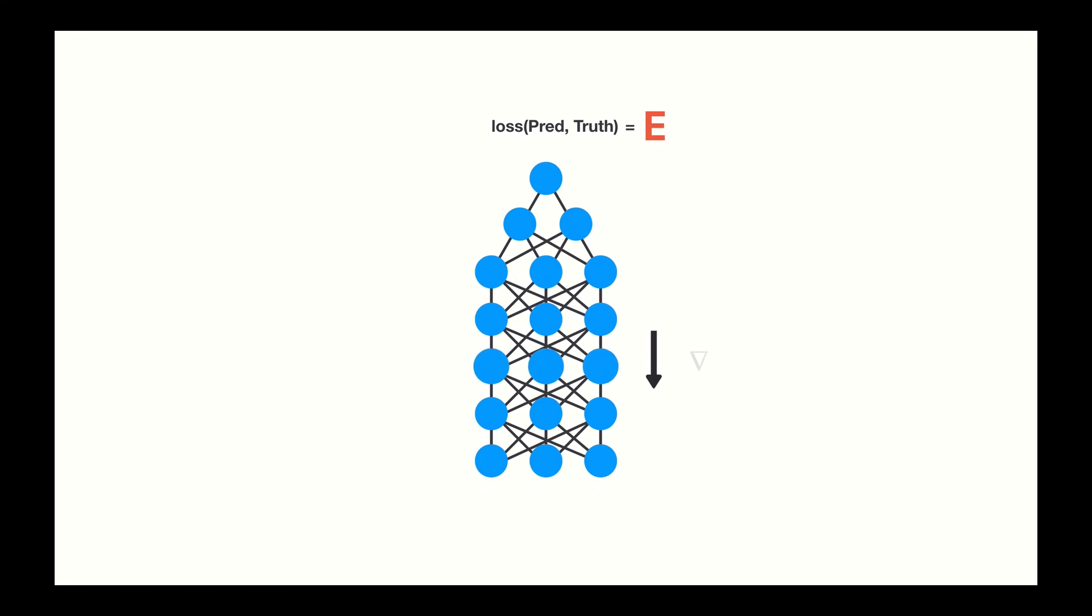This causes gradients to exponentially shrink as it backpropagates down. The earlier layers fail to do any learning as the internal weights are barely being adjusted due to extremely small gradients. And that's the vanishing gradient problem.